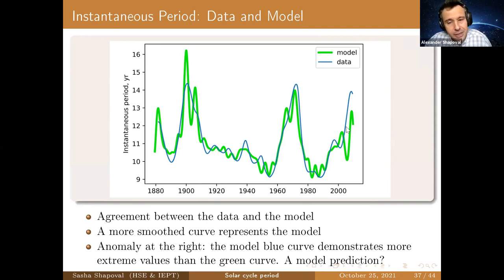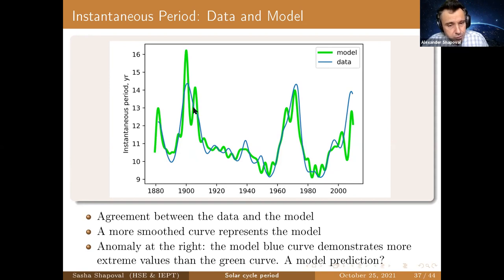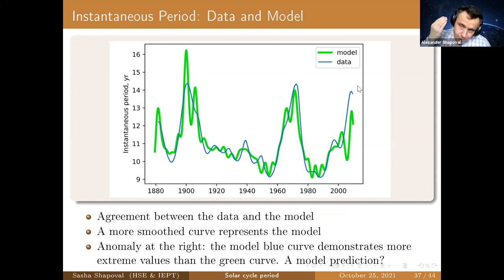What is unexpected is that at the very end, the model curve exhibits extreme values — an anomaly with respect to the green data curve. Everywhere else, at previous anomalies of the green curve, the blue model curve looks like some kind of smoothing. This is not the case at the right end. We can ask whether this is a kind of model prediction — we don't know for certain, but it is one way to look at the data.